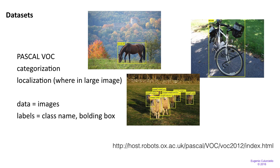We can have other datasets that don't just categorize the whole image but also do localization. They give you a larger image and ask what things are in it — for example, there's a horse in this image, but it doesn't cover the majority of the image, so you want to localize it with a bounding box. This type of dataset has images, class names, and bounding boxes. One example is the Pascal VOC dataset.